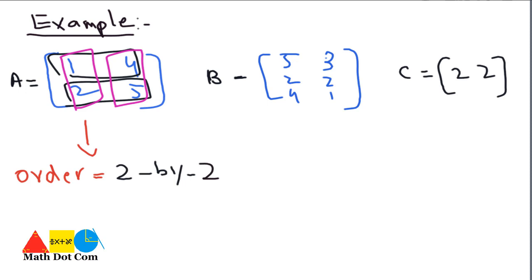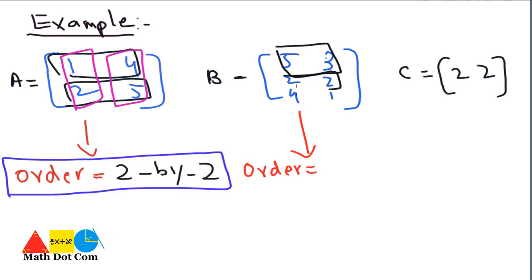If we multiply the rows and columns, we will get the number of elements as we have already seen. Now comes the next example in which the order equals the number of rows, one, two, and three. So write three by and the number of columns are one and two, so three by two is the order of matrix B.